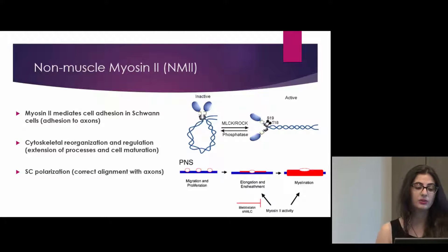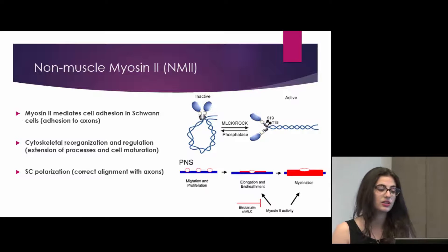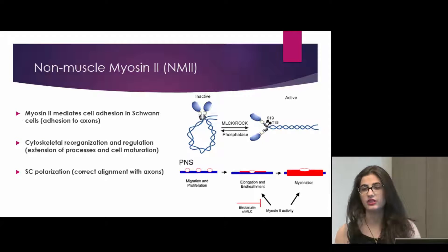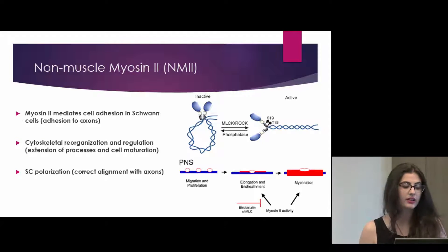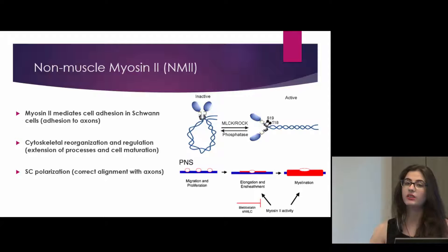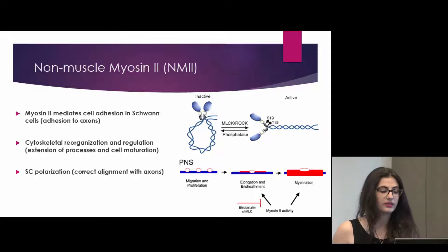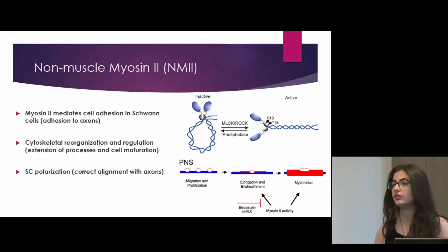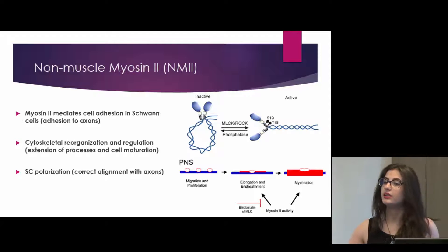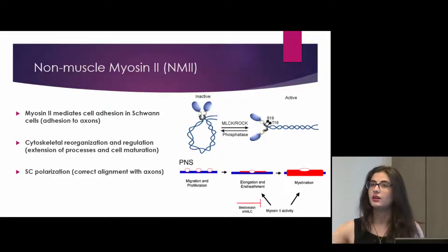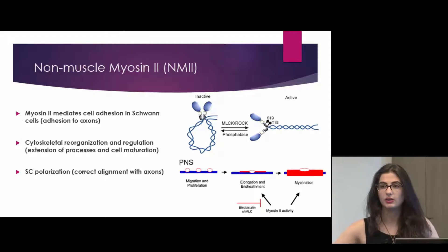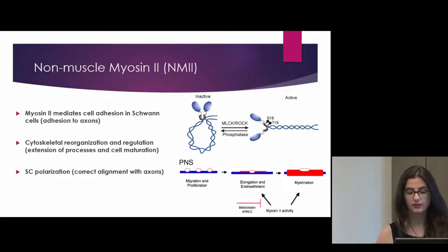Myosin-2 in Schwann cells mediates cell adhesion — so adhesion to axons — cytoskeletal reorganization and regulation, including the extension of the processes and cell maturation, and then Schwann cell polarization, meaning the ability for the Schwann cell to properly elongate along the axon.